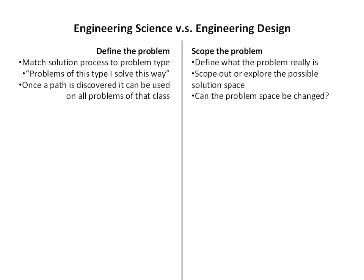In engineering science, we tend to define the problem and match a solution process to a problem type — problems of type A are solved this particular way. Once a path is discovered, the great thing about engineering science problems is that once you know how to do a particular type of problem, if you can fit any problem to that class, you know how to solve it. It's very efficient for problems that are solvable.